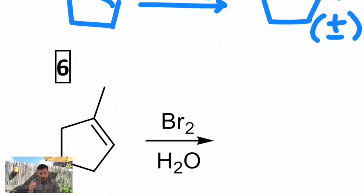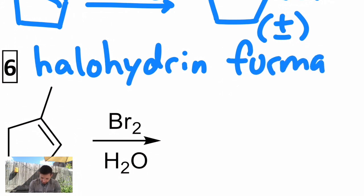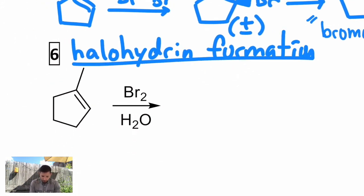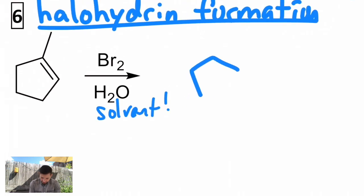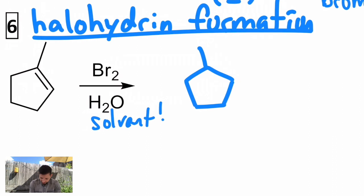The next one, called halohydrin formation, has the same feature. This is the same cyclopentene with bromine, but now using an excess of water as a solvent. You get the addition of a bromine where you think it's going to go. Then you do get anti-addition, but you don't get a second bromine. You actually get an OH group. When you have an OH and a bromine on adjacent vicinal carbons, that's called a halohydrin.